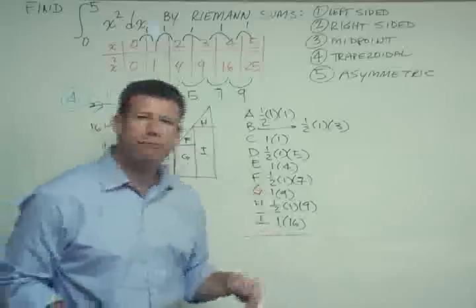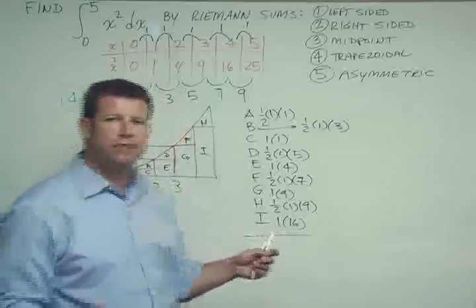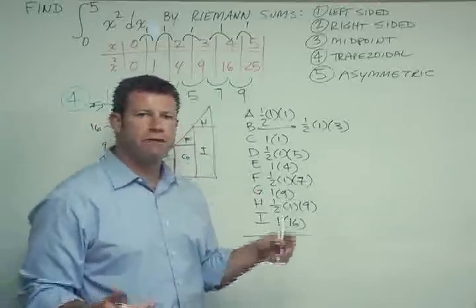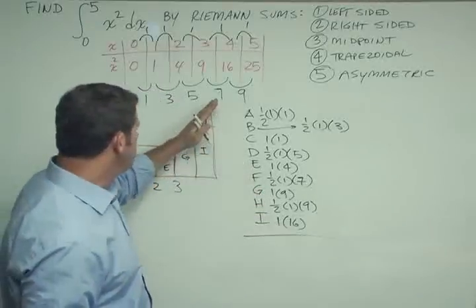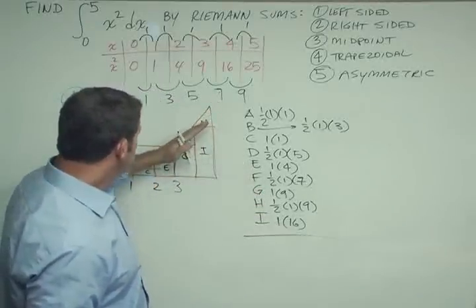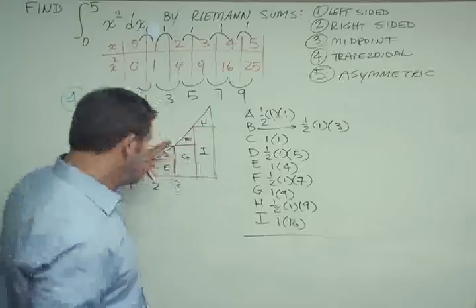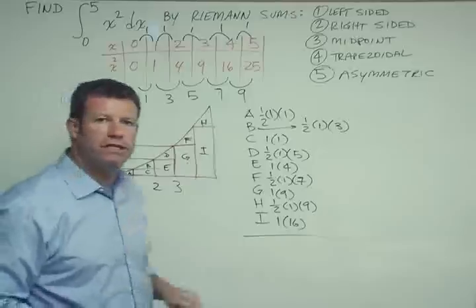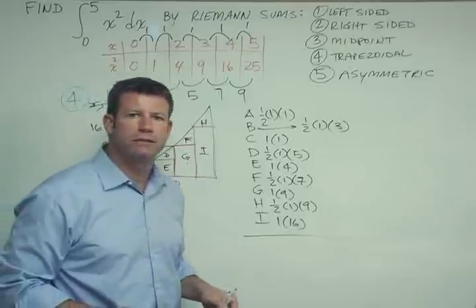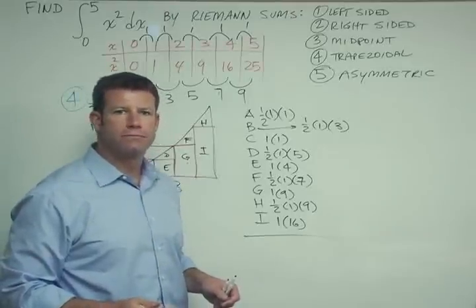The idea is we use trapezoids, which obviously much more closely mimic the function, because we divide the function into little straight line segments that correspond to each of our pieces in our Riemann sum.